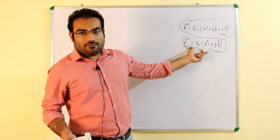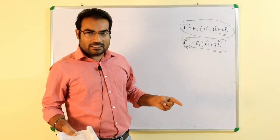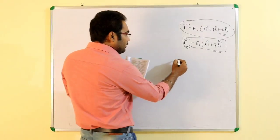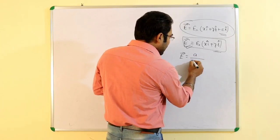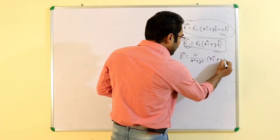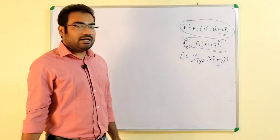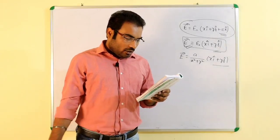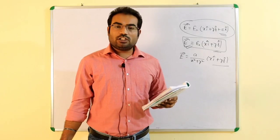तो electric field का value कितना दे रखे हैं देख लेते हैं: A/(x²+y²) into (x i-cap + y j-cap) — यही दिया हुआ electric field vector का equation है। अच्छी बात है, और इसके through sphere के through electric flux बताना है। Find the flux of the vector E through the sphere of radius R with its center at the origin of coordinates.